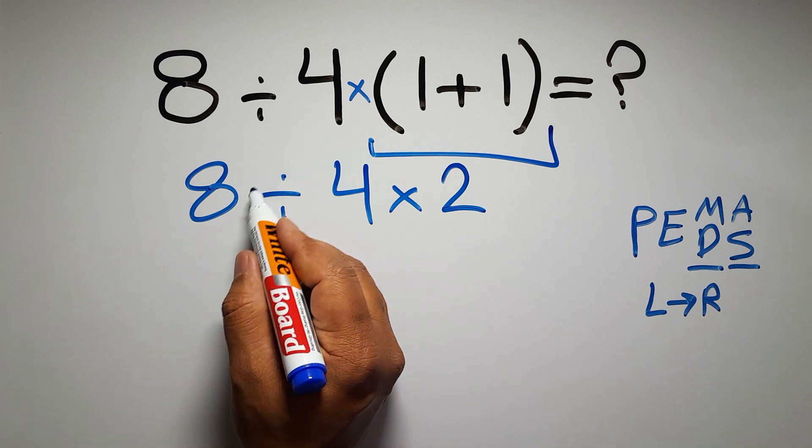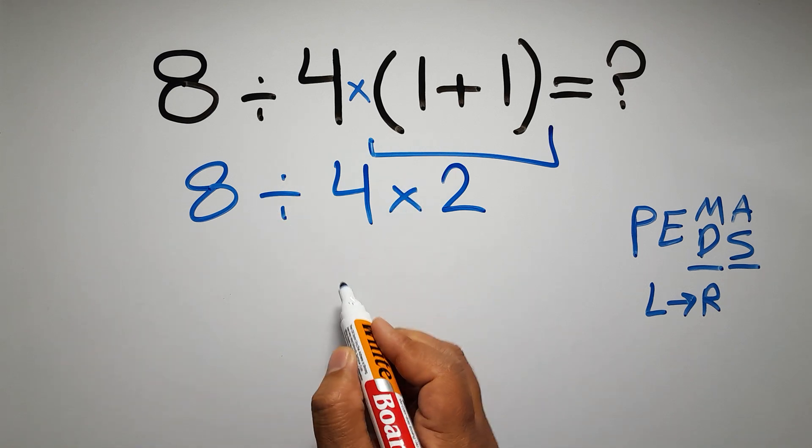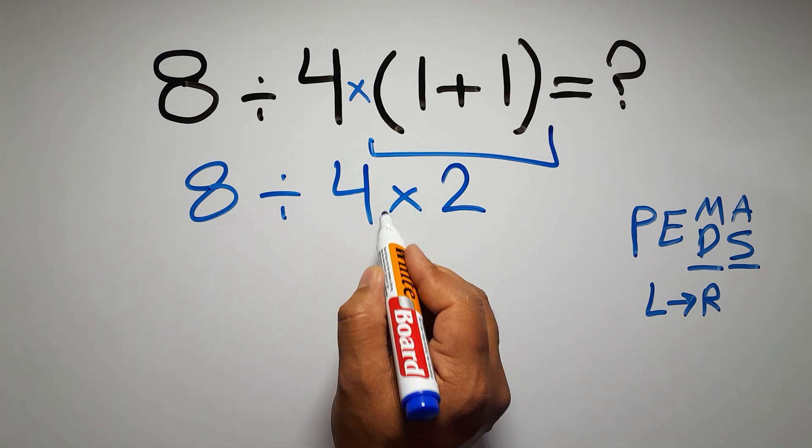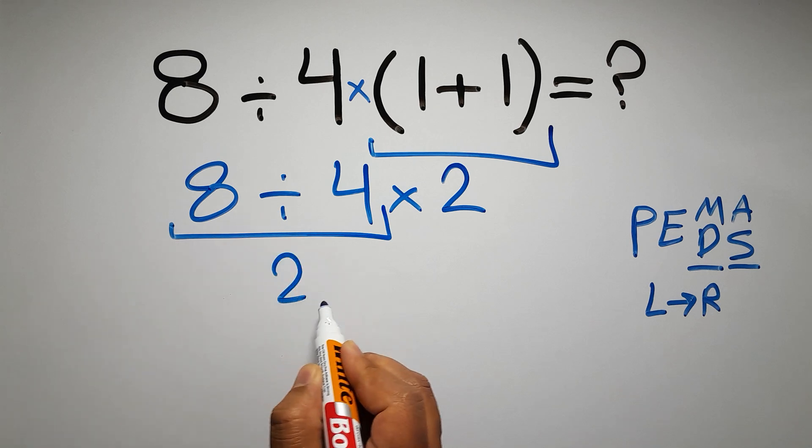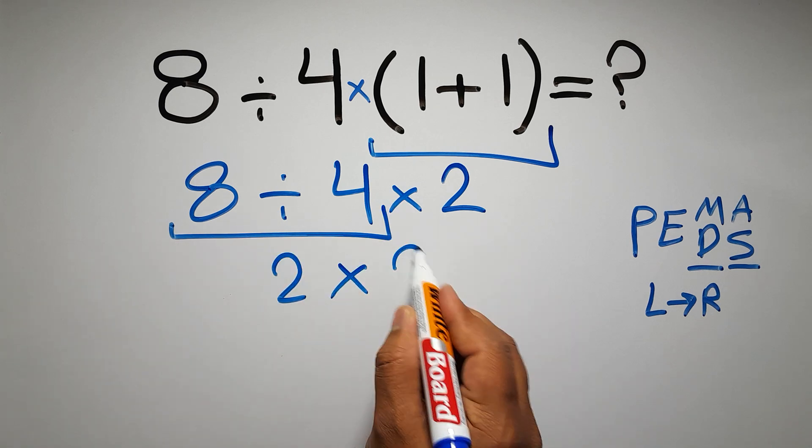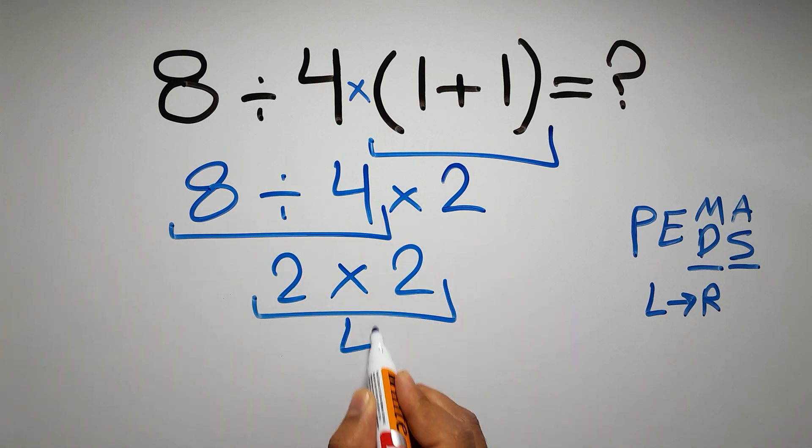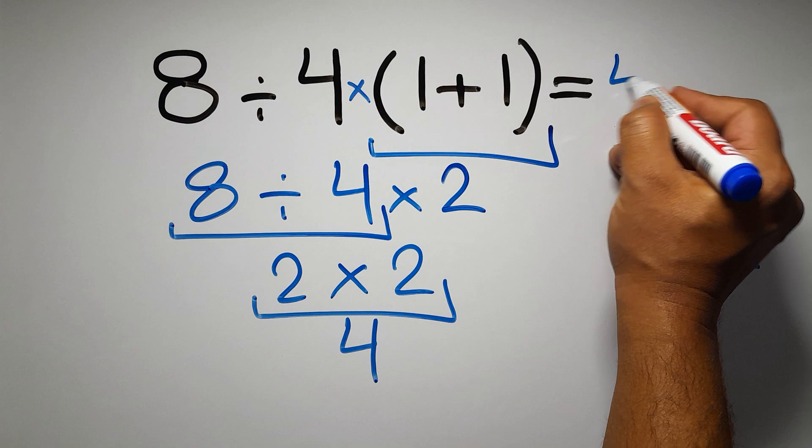So here first we have to do this division, then this multiplication. 8 divided by 4 gives us 2, so 2 times 2 which equals 4. And this is our final answer to this problem. The correct answer is 4.